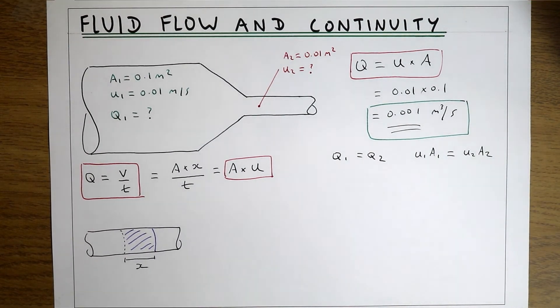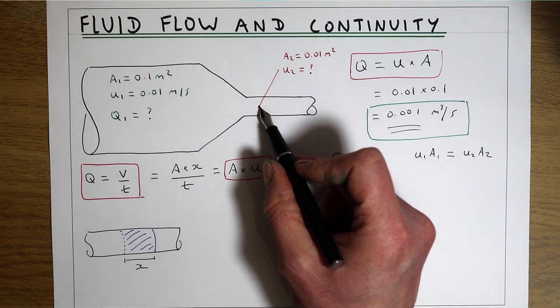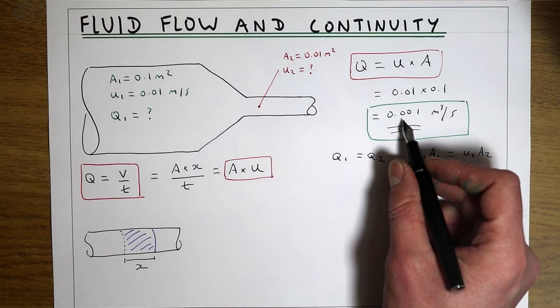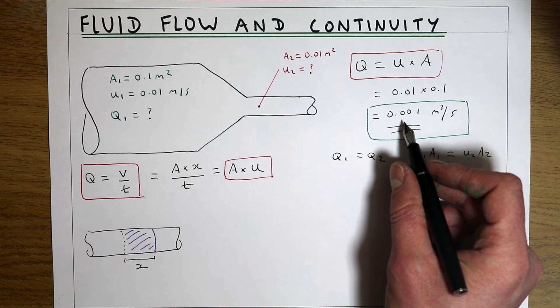What that means is we actually already have the flow at this point, so we know that Q2 has got to be the same as Q1, which is 0.001 m³/s.